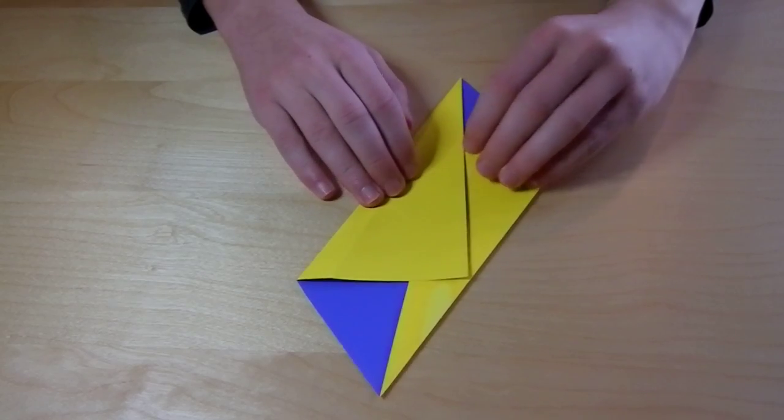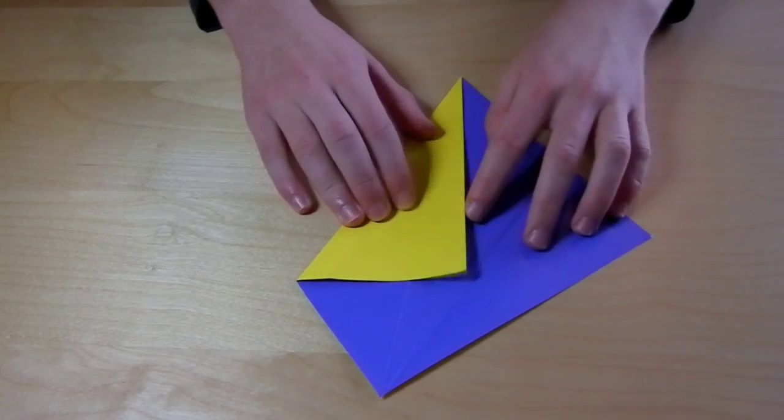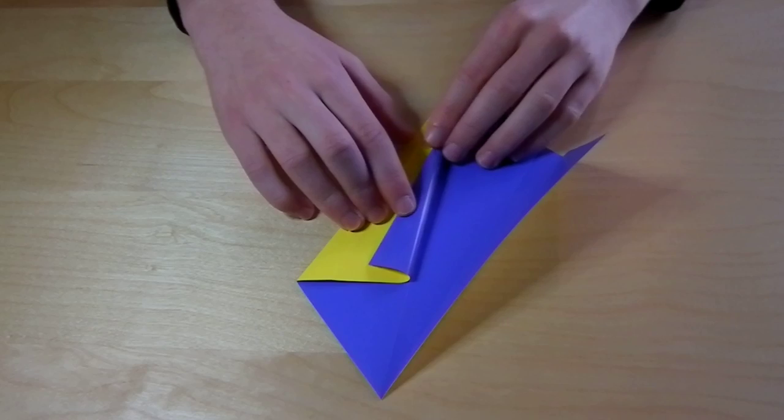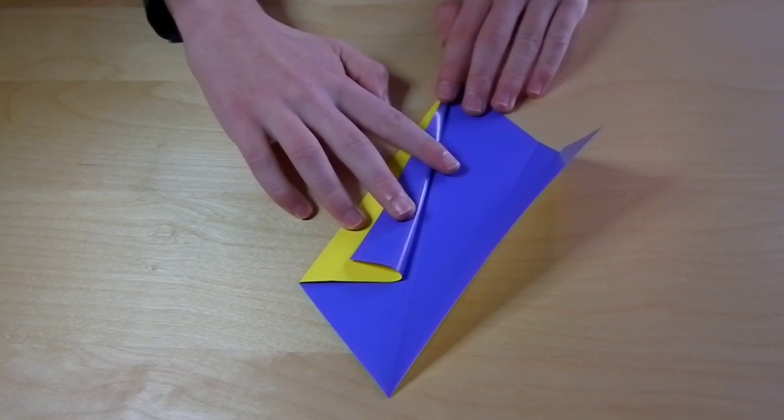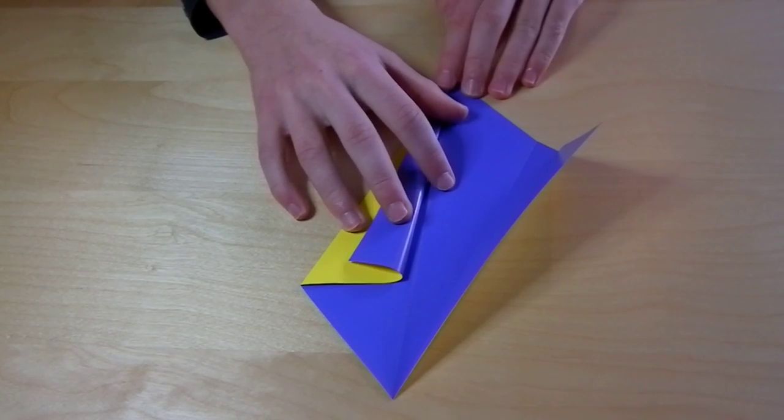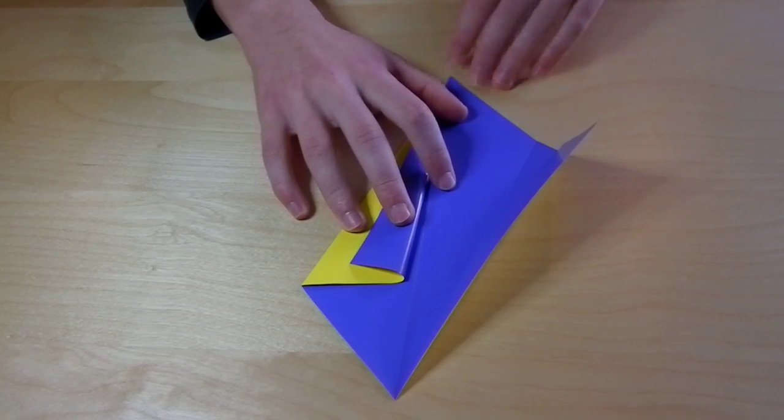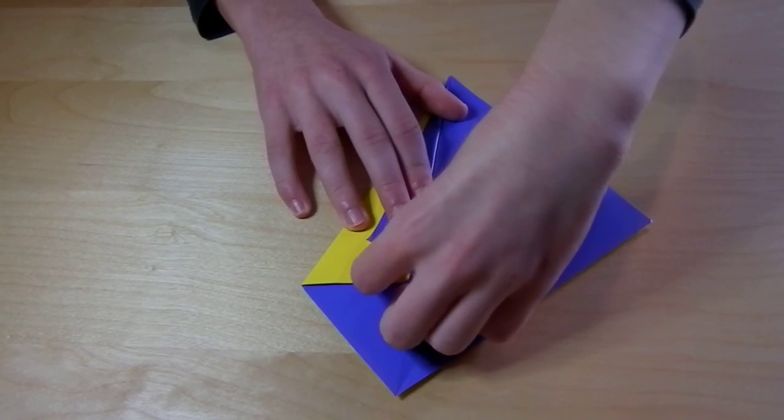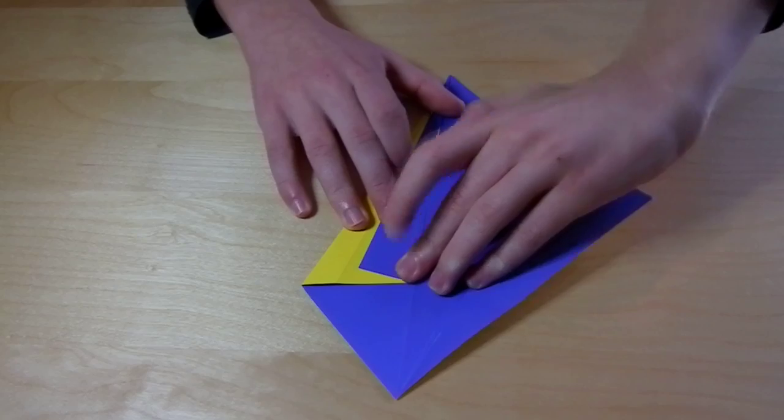And then we're going to unfold here, then fold in the edge. And then you fold it, make sure it aligns with the diagonal crease that we made in the beginning.